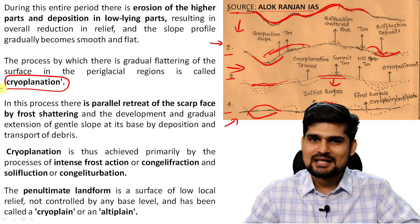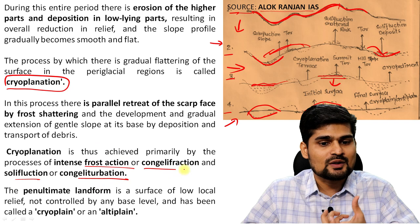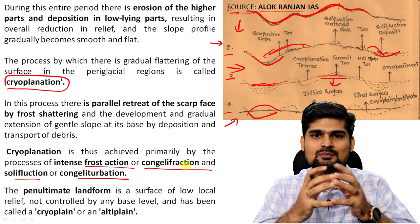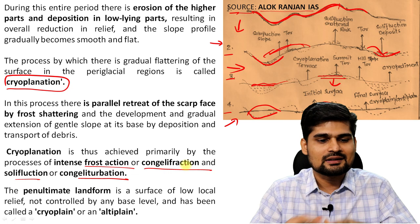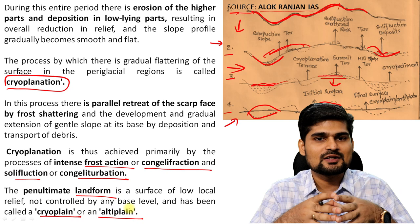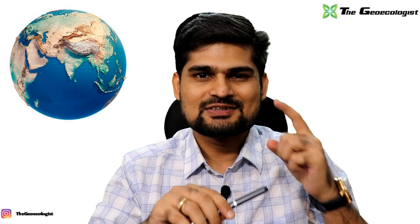Cryoplanation involves congeliturbation, solifluxion, and intense frost action — also called congeli-fraction, meaning breaking away. This freeze-thaw cycle is what generates and drives the periglacial cycle. The penultimate stage of the landform, like in other cycles, is called cryoplane or altiplane. This is the terminology related to the periglacial cycle of erosion given by Peltier in 1950. Now that we have discussed in detail the periglacial processes, landforms, and the periglacial cycle of erosion, in sessions to come we'll be talking more on different theories related to mountain building and related processes in physical geography. Stay tuned, stay safe, keep watching.